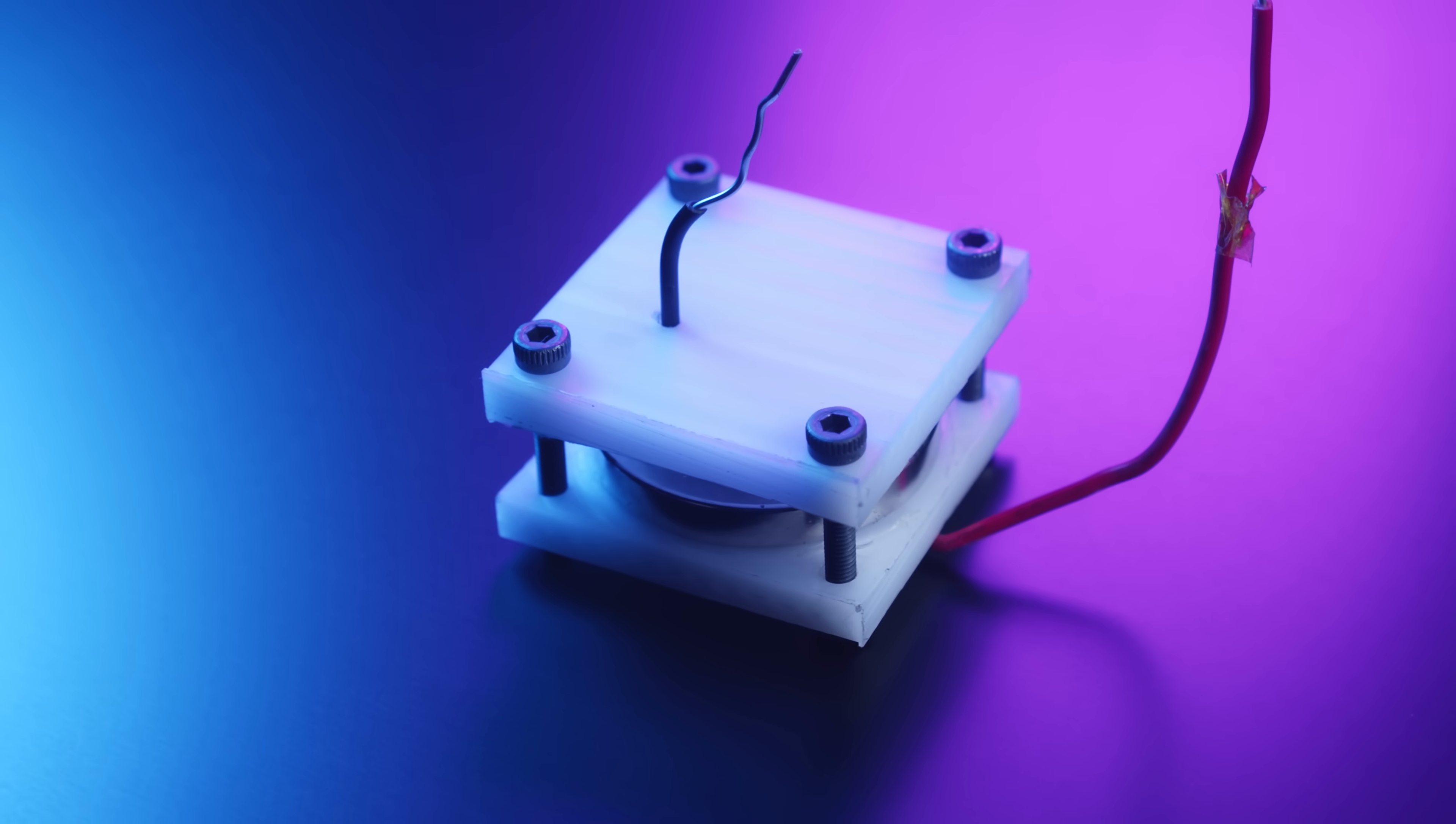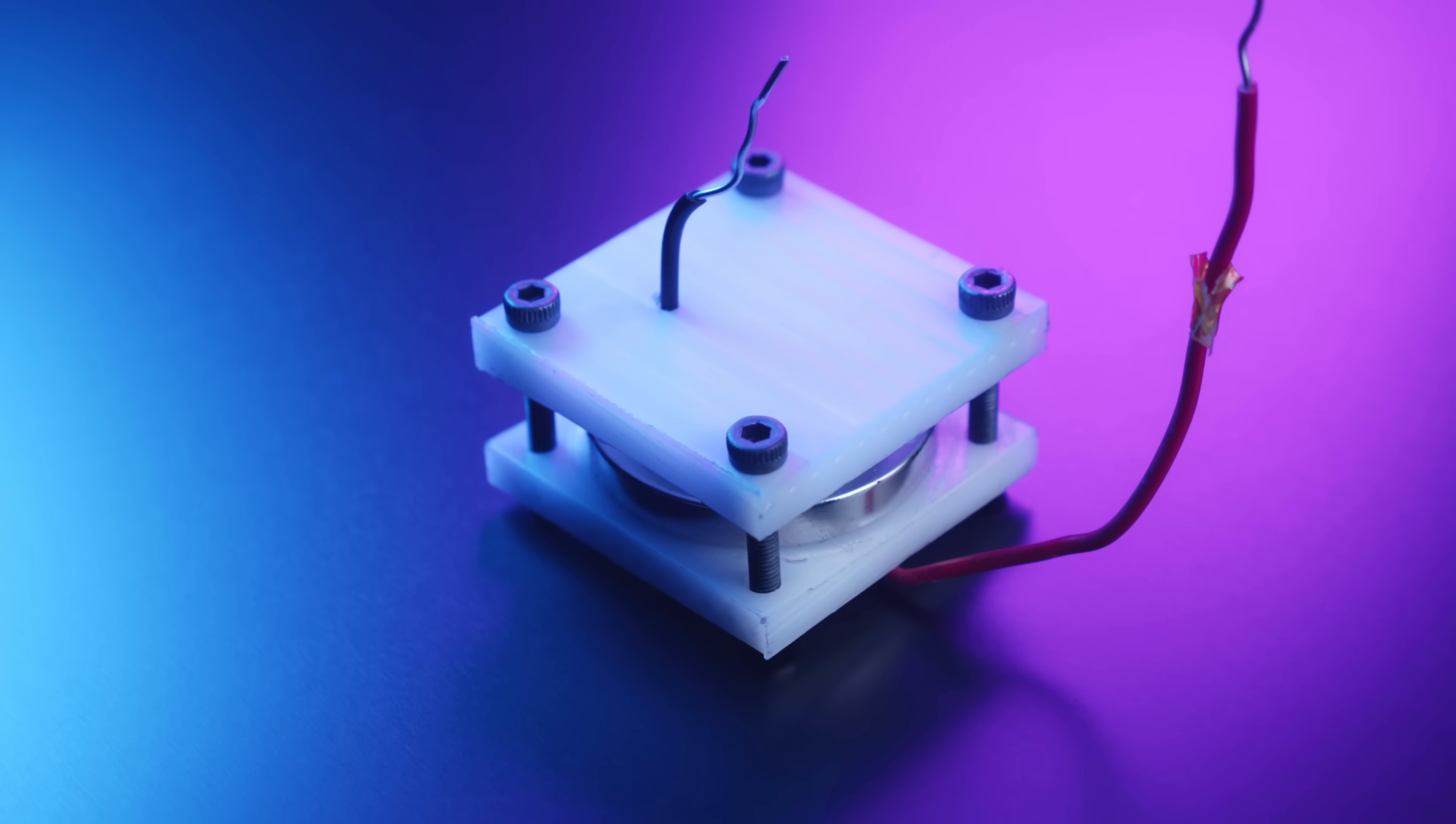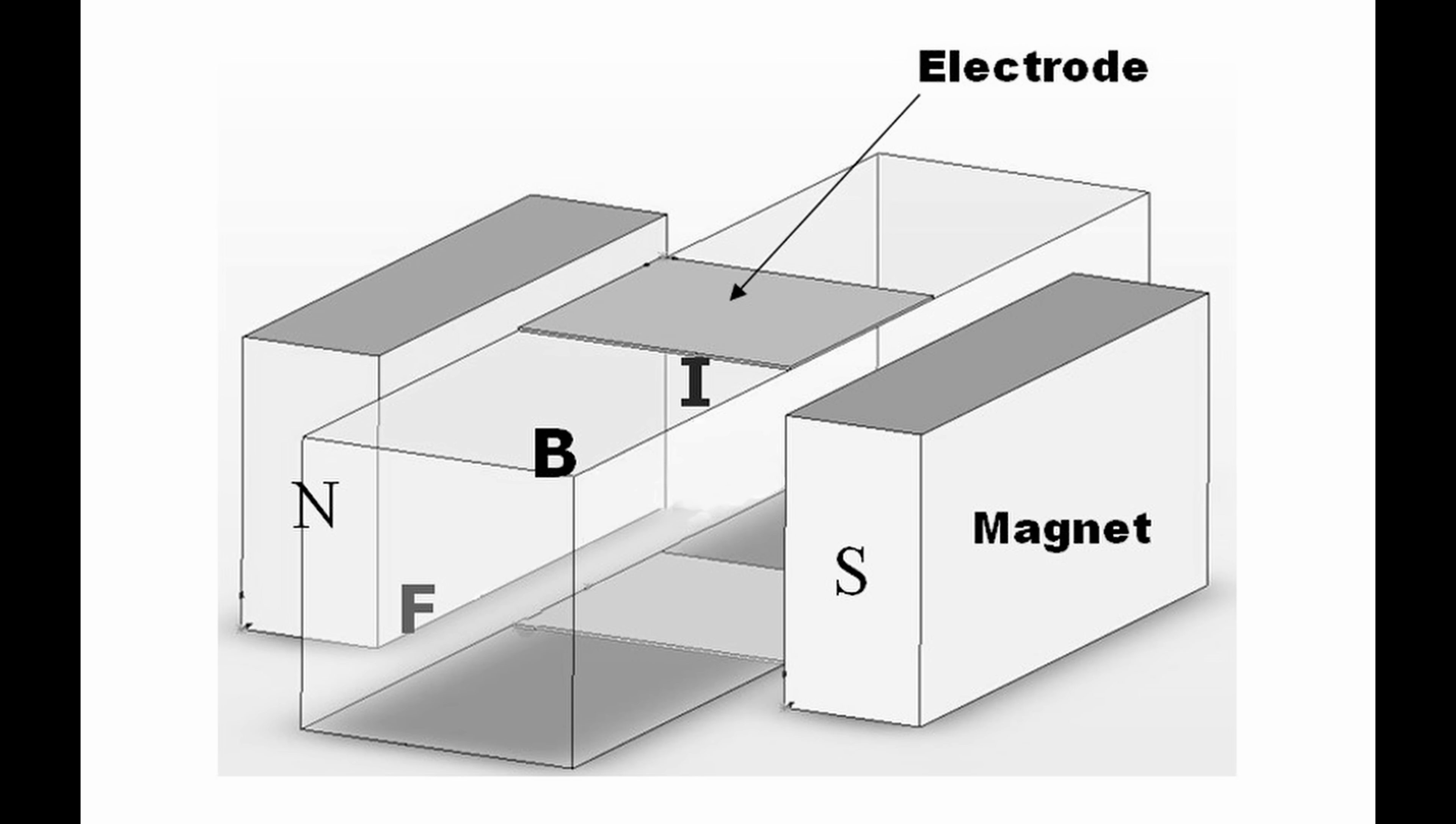Okay, so what's up with this weird liquid metal thing that I built? When a strong magnetic field is applied to the liquid metal in one direction and an electric current is applied perpendicular to that direction, the metal begins to flow.